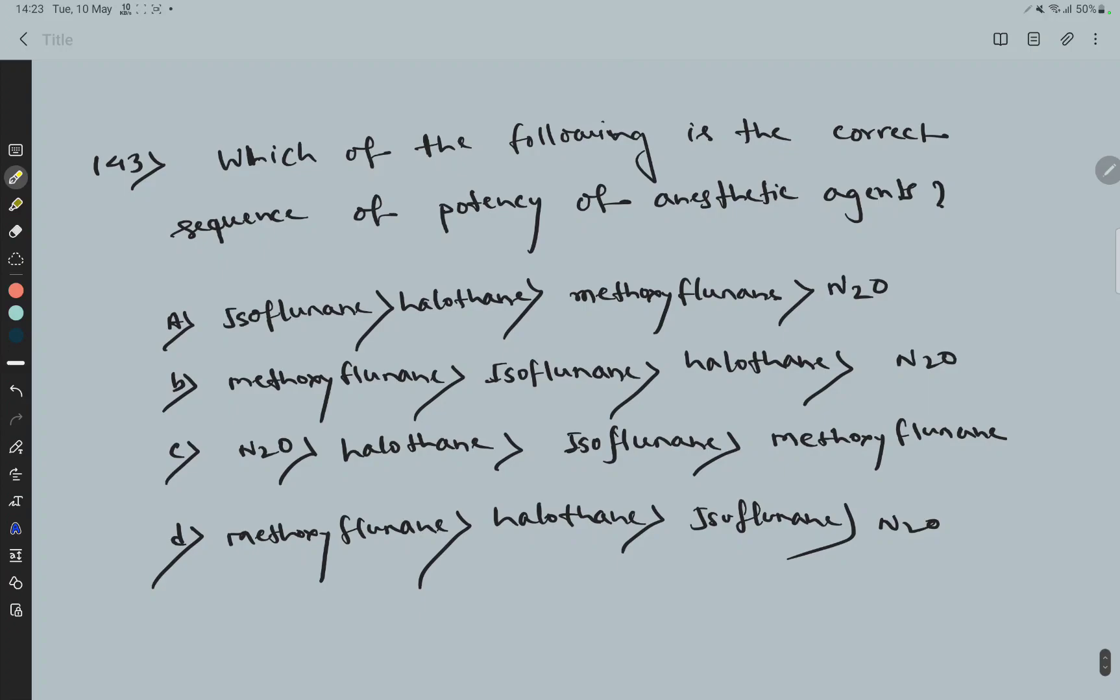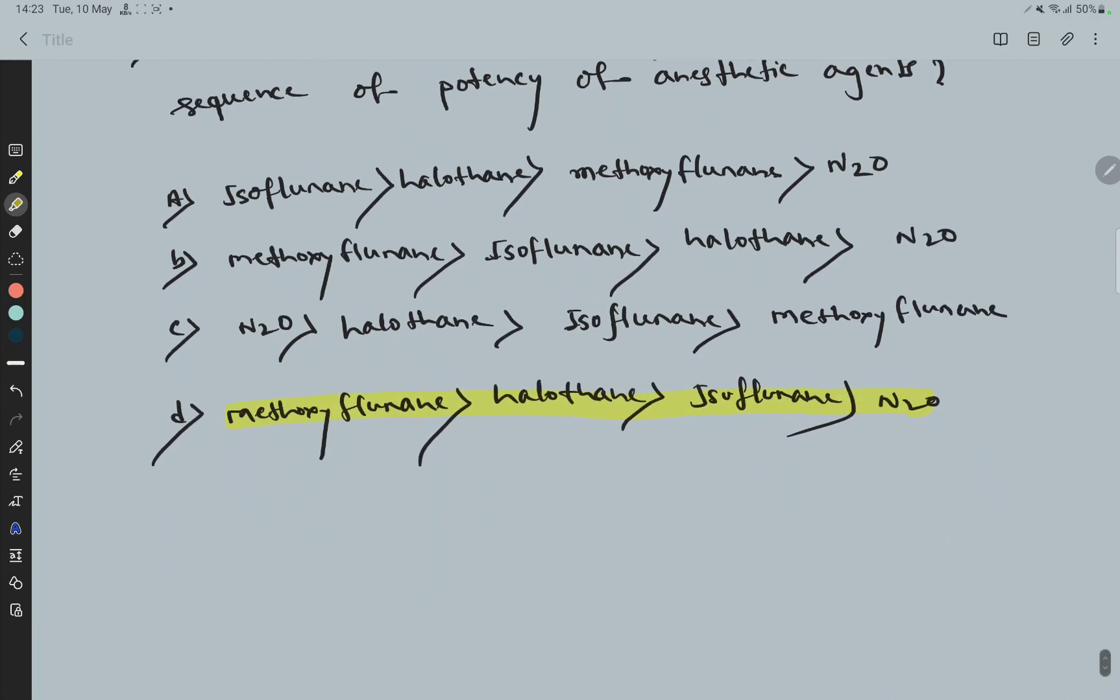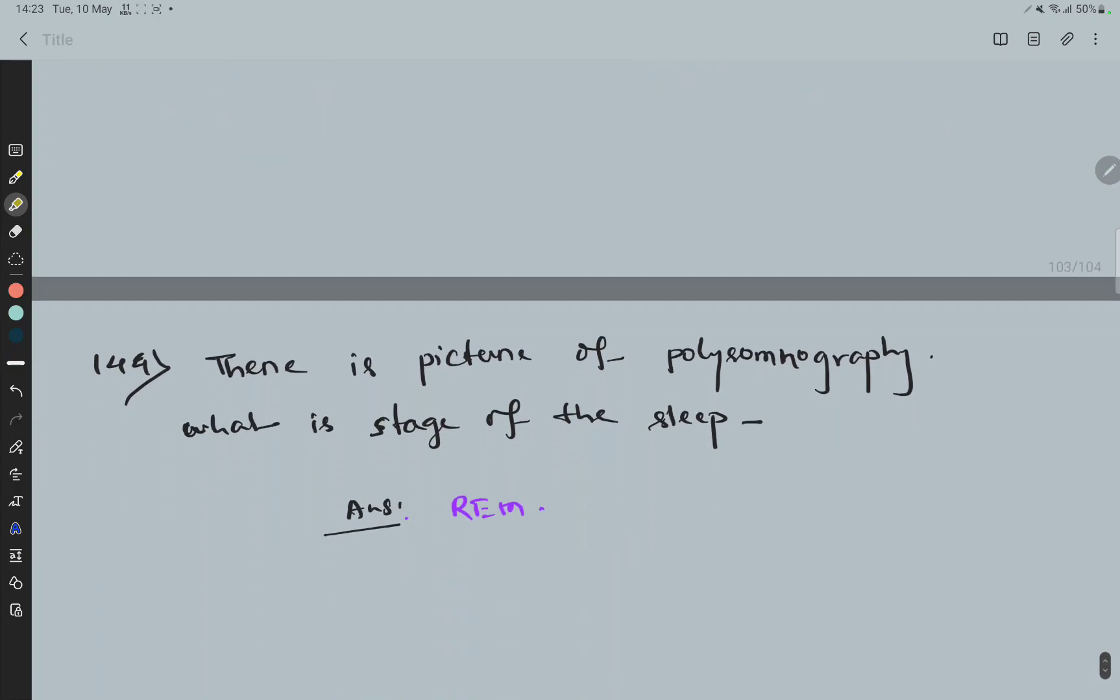Question 143: Which of the following is the correct sequence of potency of anesthetic agents. These are the four options. The right option is Methoxyflurane, Halothane, Isoflurane, N2O.